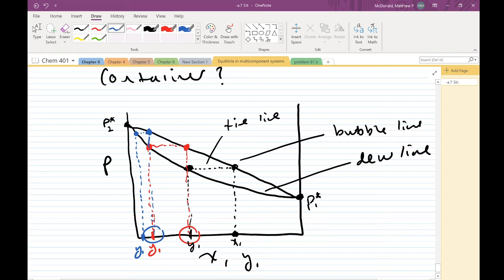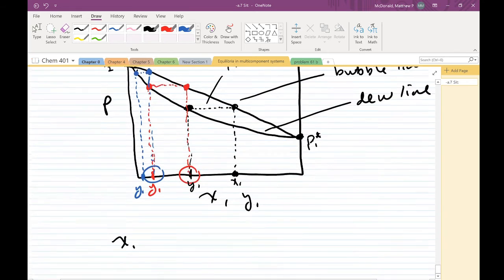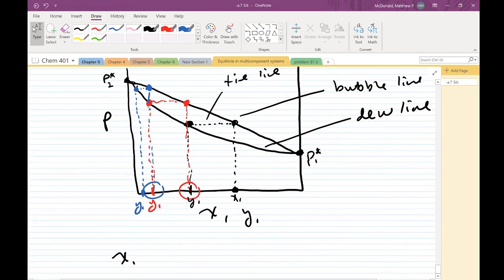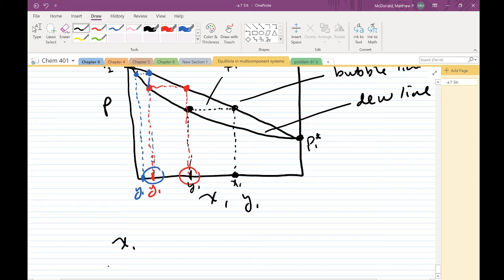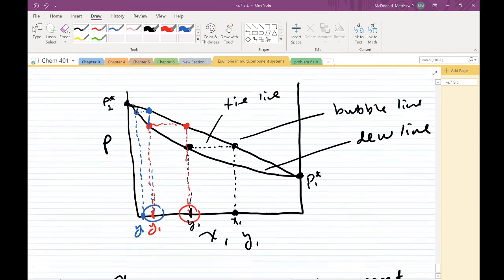And this is, again, a new vapor phase. And we can do this again, again, and again, and again, until we get to basically pure P2. Collect vapor, condense the vapor, and repeat. What does this sound like to you guys? What are we doing here? You've done it many times in the lab, I guarantee it.